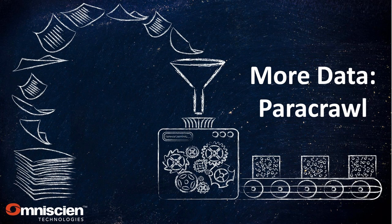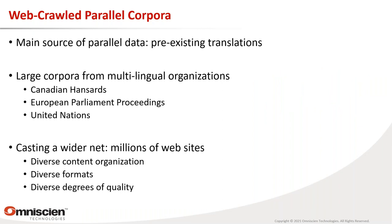Let me give an update on the Paracrawl project — web-crawled parallel corpora. This is the main source of parallel data used now, consisting of pre-existing translations. Historically these came from large multilingual organizations like the Canadian Parliament, the European Parliament, and the United Nations. But there are many more translations available on the web with much more diverse content, formats, and varying degrees of quality.